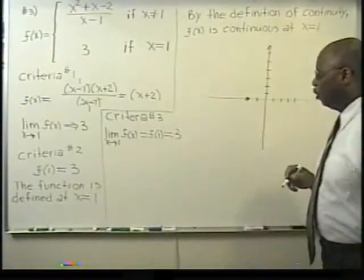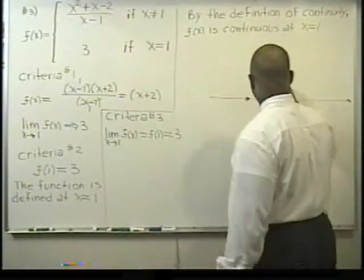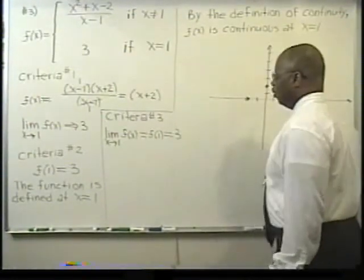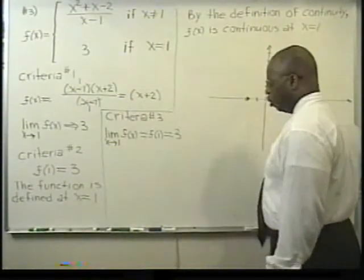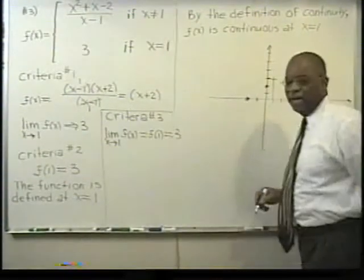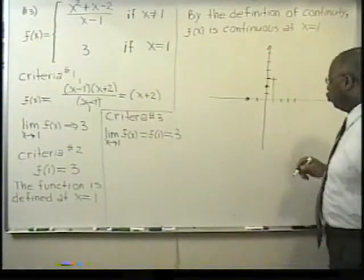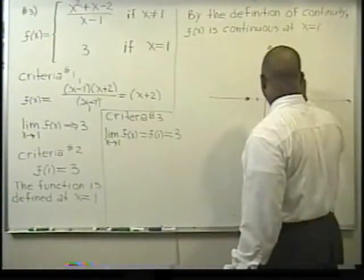I know at zero, it's two. And I know that at one, well, in this case, the function is defined at x equals one. It's three. So, I can close that circle in.